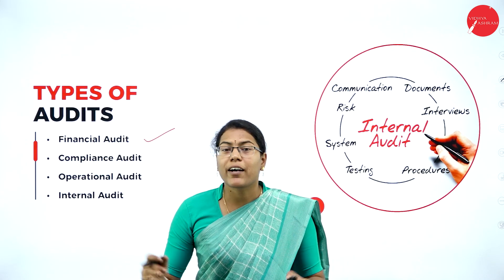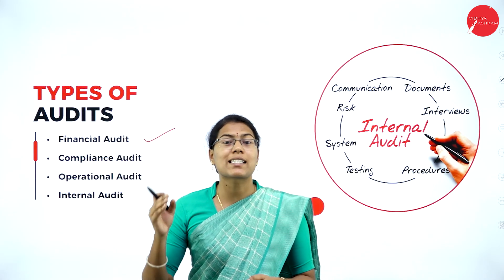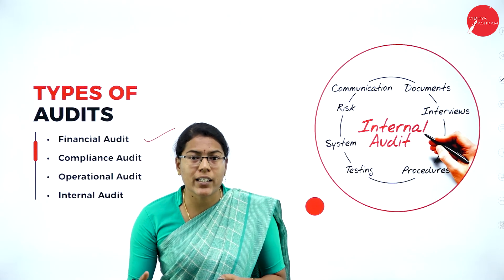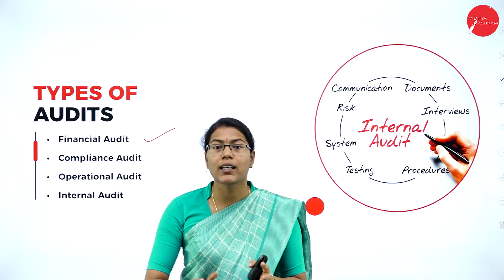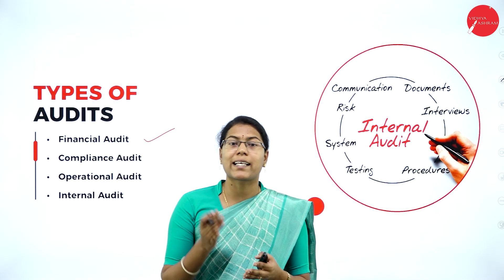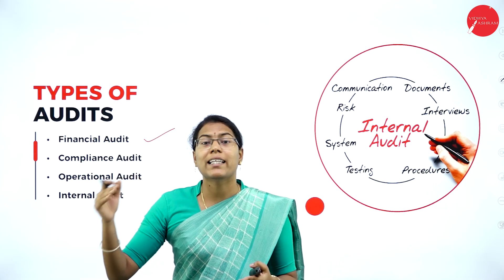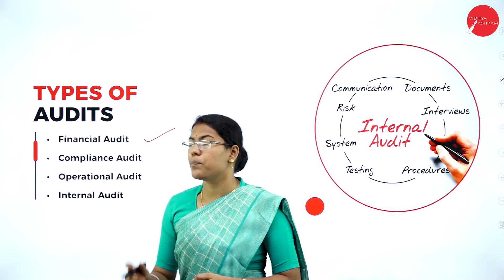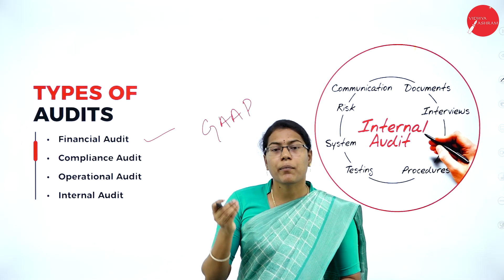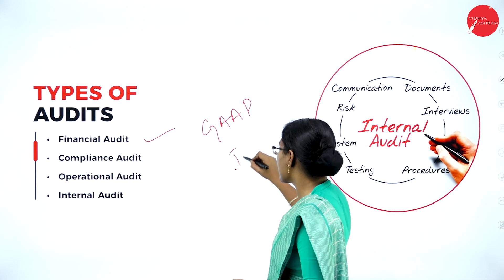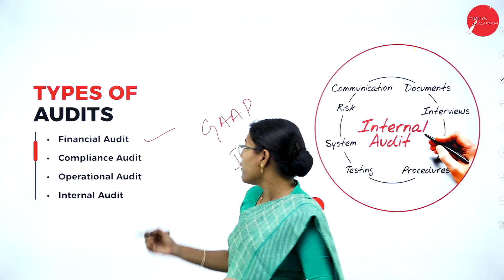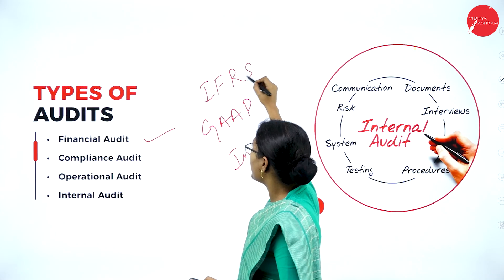Financial audit: in a financial audit, the auditor examines the financial statements or the financial position of the business organization. The basic objective is to ensure that the financial statements are presenting an accurate and true and fair view of the financial position of the business. A financial audit involves examining the financial statements and ensuring that they comply with generally accepted accounting principles. These generally accepted accounting principles may include, for example in India, IND-AS, that is Indian Accounting Standards, or at the international level, IFRS, International Financial Reporting Standards.